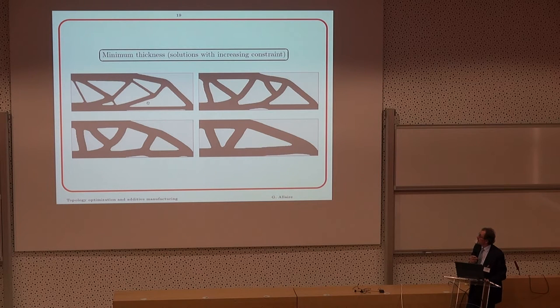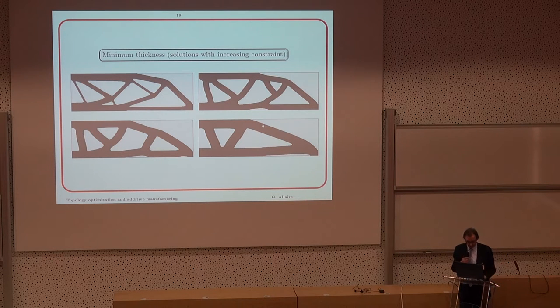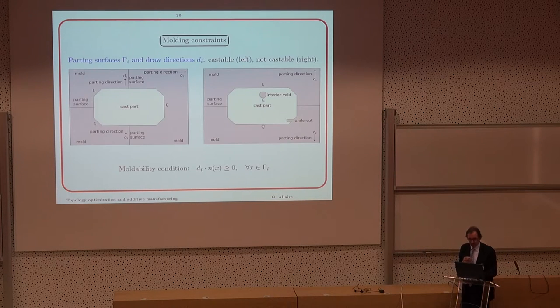Minimal thickness. On the top left, this is without constraint. It's a different volume, so I choose this volume because I have very thick bars. Then I enforce minimal thickness constraints, which are more and more strict. That means less and less bars because the volume is the same.